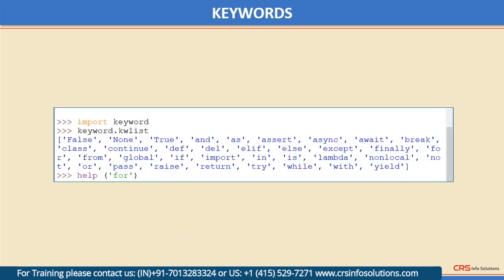As mentioned earlier, keywords are predefined identifiers. The programmer is required to make use of these keywords as per the prescribed rules of syntax to construct the programming logic. There are 35 keywords in Python as of now. You can find out how many keywords there are at the Python prompt in an interactive console — first import the keyword module. 'Import' is also a keyword. Then type keyword.kwlist and the list of all keywords is displayed.